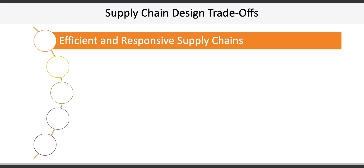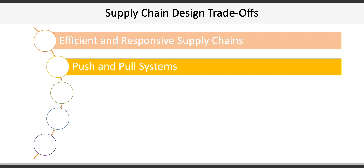The second trade-off relates to push versus pull systems. A push system produces goods in advance of customer demand using a forecast of sales and moves them through the supply chain to the points of sale, where they are stored as finished goods inventory. Best Buy and other retail stores operate in a push system. A pull system produces only what is needed in upstream stages in response to customer demand signals from downstream stages. Boeing and Airbus would operate in a pull system.